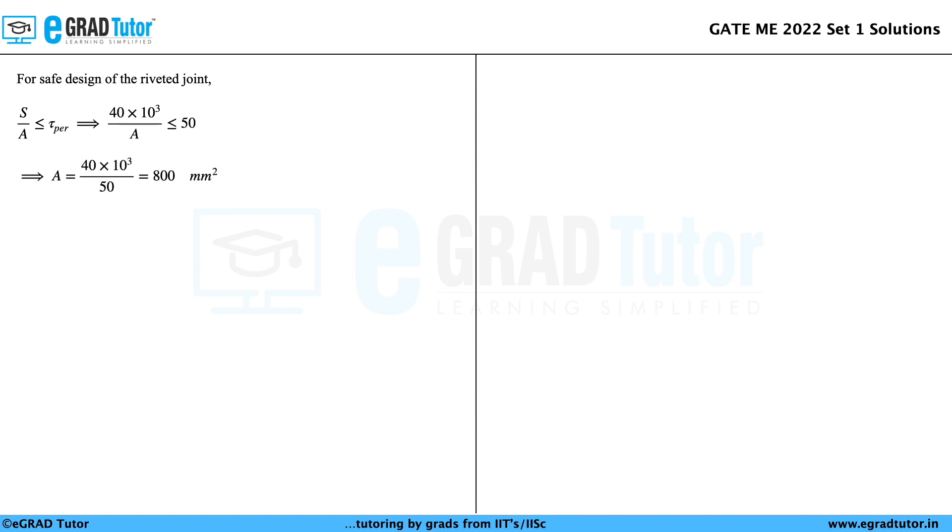That is, the minimum cross-sectional area of each rivet required to avoid failure is 800 mm². Hence, the correct answer to this question is option A.